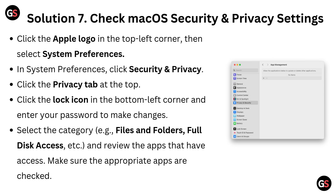Solution 7: Check Mac OS Security and Privacy settings. Click the Apple logo in the top left corner, then select System Preferences. In System Preferences, click Security and Privacy, then click the Privacy tab at the top. Click the lock icon in the bottom left corner and enter your password to make changes. Select the relevant category — such as Files and Folders, Full Disk Access, etc. — and review the apps that have access. Make sure the appropriate apps are checked.